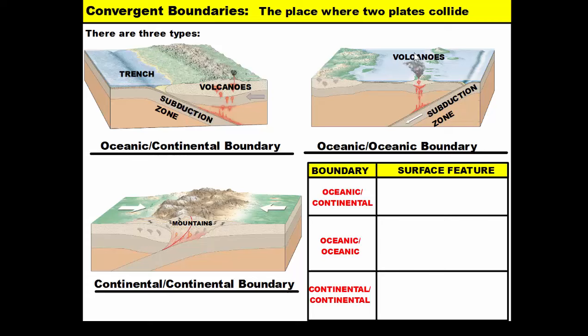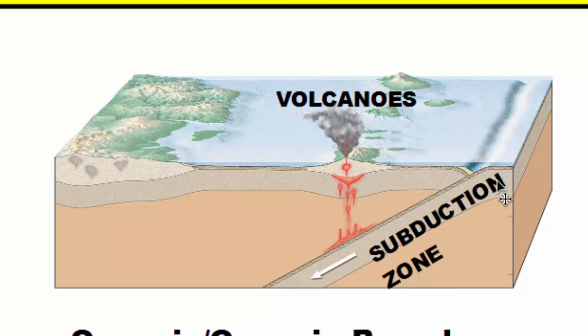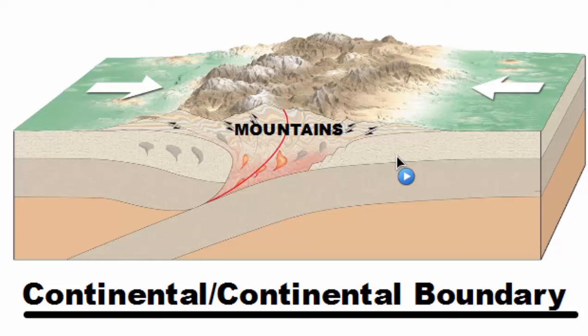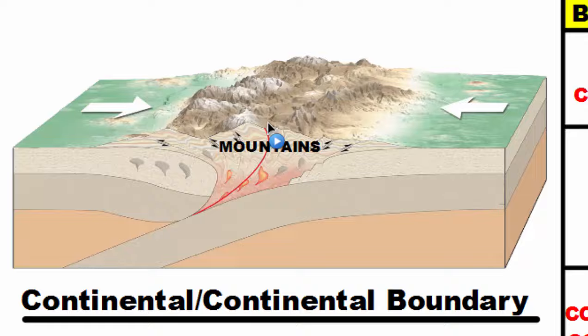An oceanic-oceanic boundary works the same way — when the two pieces of crust collide, one will be more dense, subduct, move down into the Earth, melt, erupt, and create volcanoes on the surface. Oceanic-oceanic and oceanic-continental boundaries work the same, except they're just two different types of crust. However, continental crust works a little bit differently. Continental crust has two pieces of land colliding, and although some of it will subduct, the continental crust on the surface is not going to go down into the Earth — it's going to collide and force the rock to fold and buckle, which is how you have regular mountains that are not volcanic.